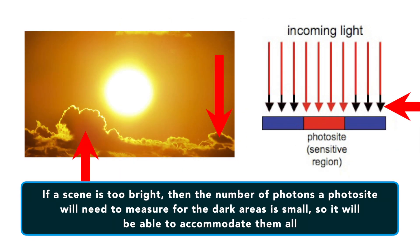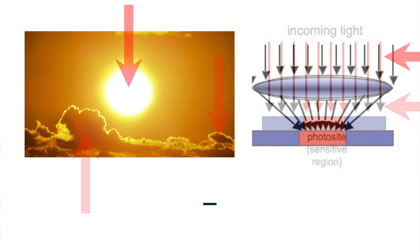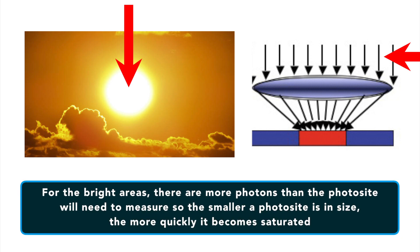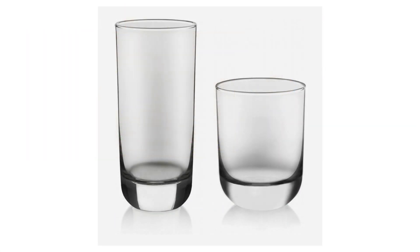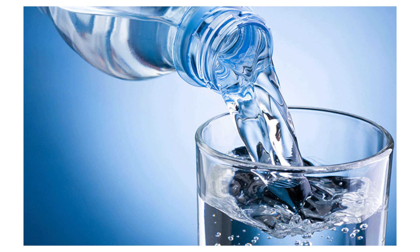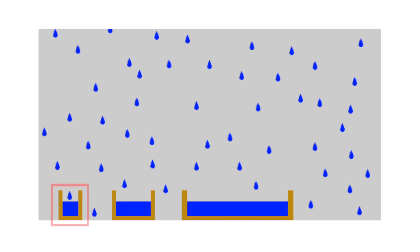If a scene is too bright, then the number of photons a photosite will need to measure from the dark areas is very small, so it will be able to accommodate them all. However, for the bright areas, there are more photons than the photosites will need to measure. So, the smaller a photosite is in size, the more quickly it becomes saturated. Think of it like this: you have two glasses, one very large and one very small. If you put water in the glasses, which glass is going to fill up first? Obviously the small one. The photosites work the same way. A smaller photosite means it can only capture fewer photons, so it's going to fill up first and then you have a problem.